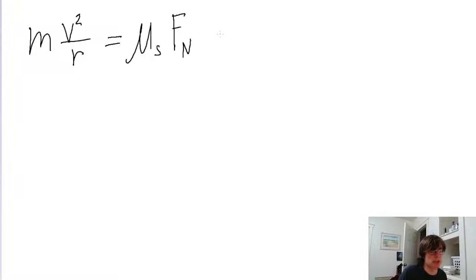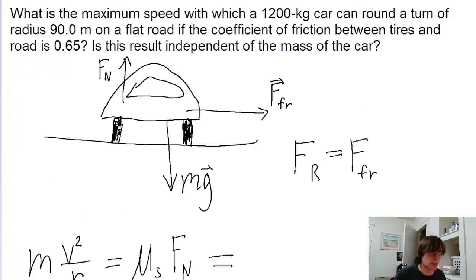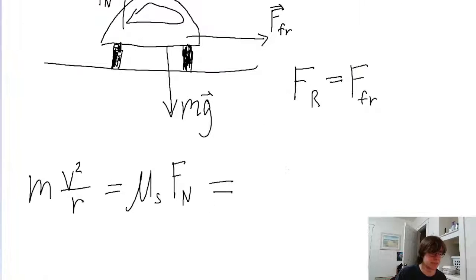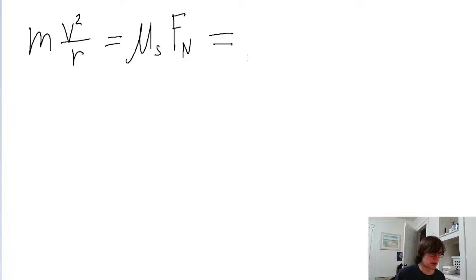Another thing we need to do to expand this out is we don't have the normal force, but we can see from our diagram that the normal force is only being countered by the weight of the car. And since there is no vertical acceleration of the car, as far as we know, we can assume that the normal force is equal to the weight, or mg. So this part of the equation, mu sub s times mg.